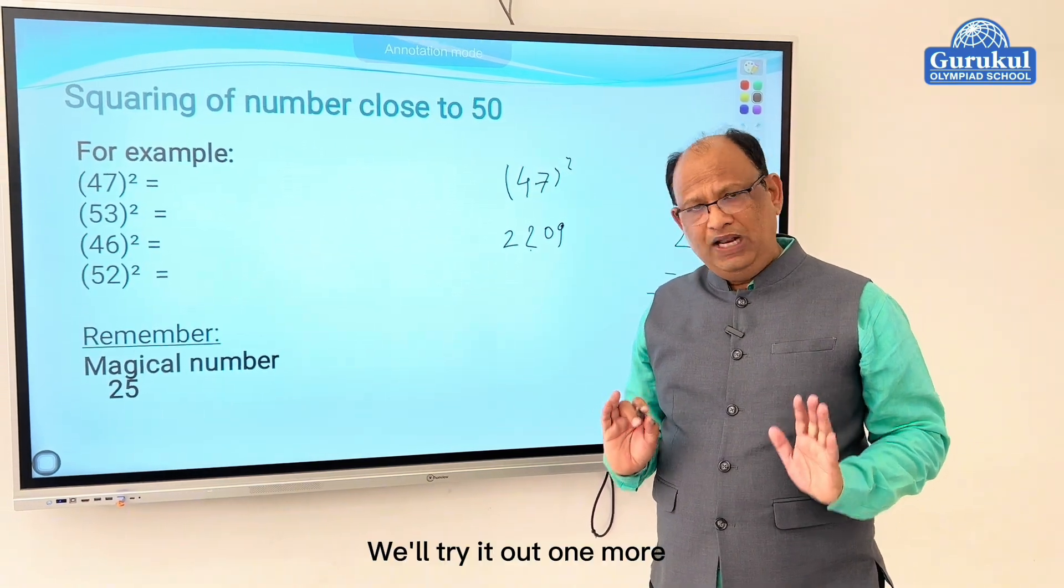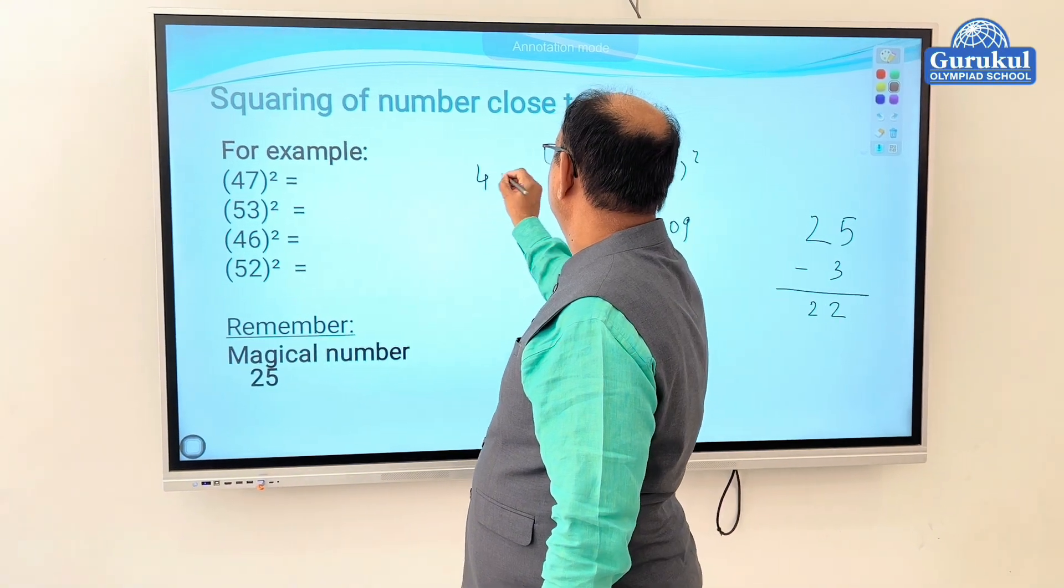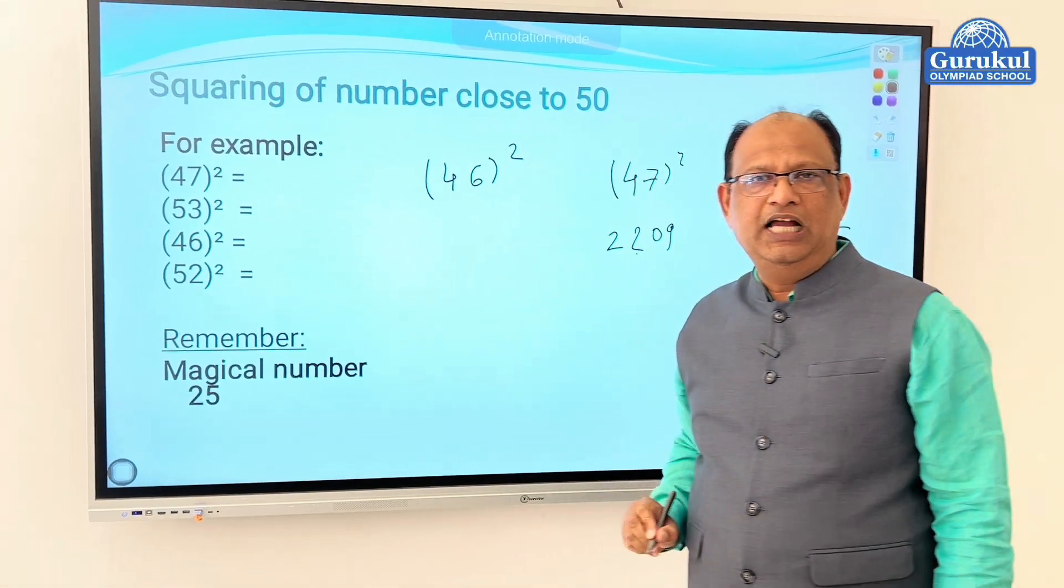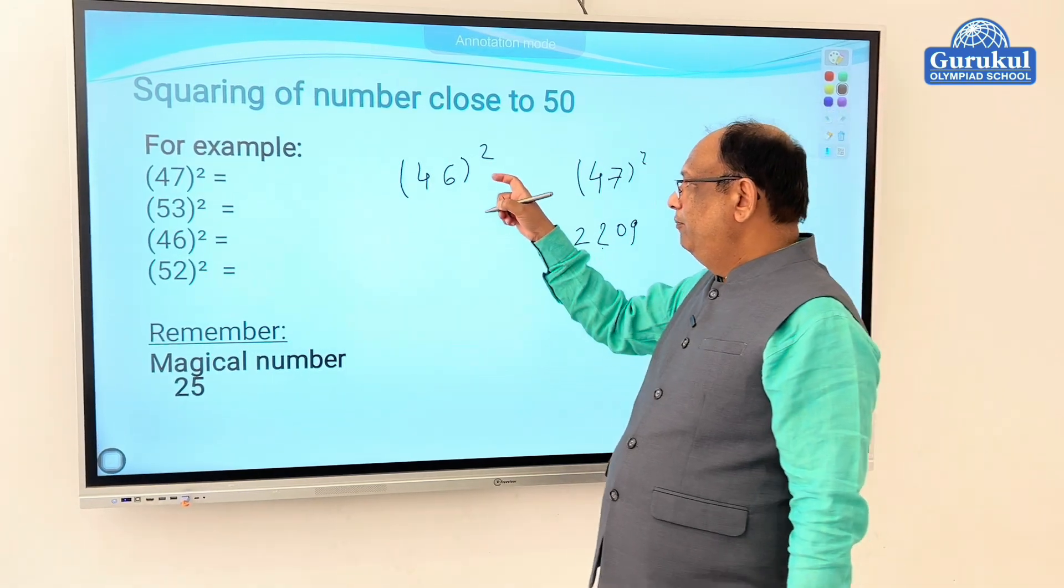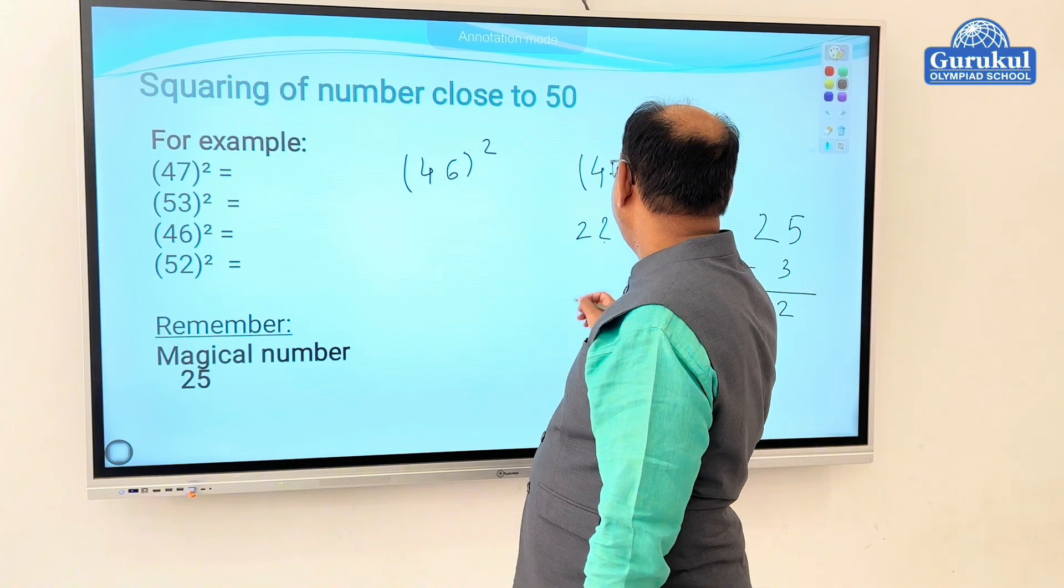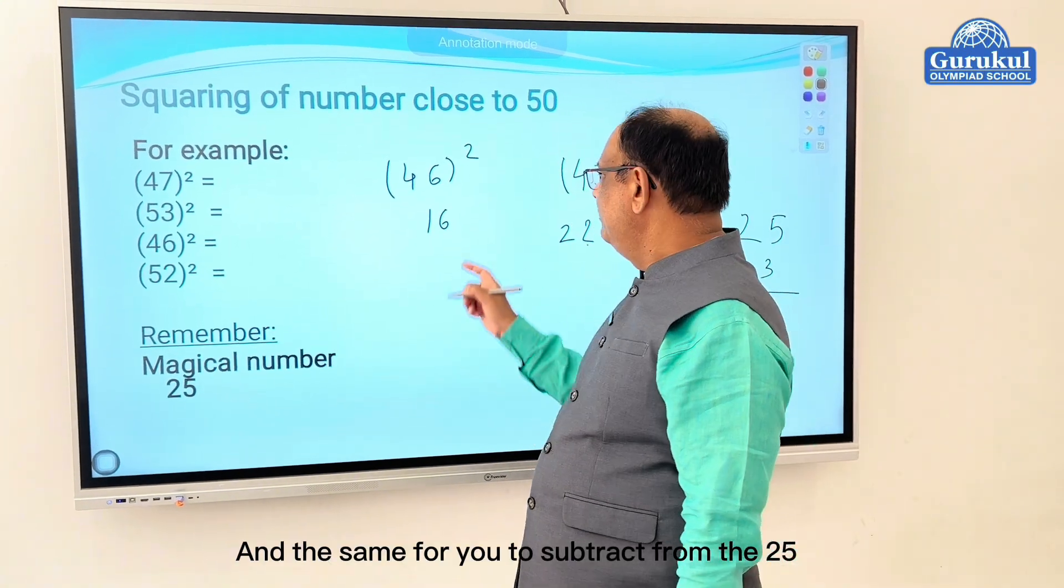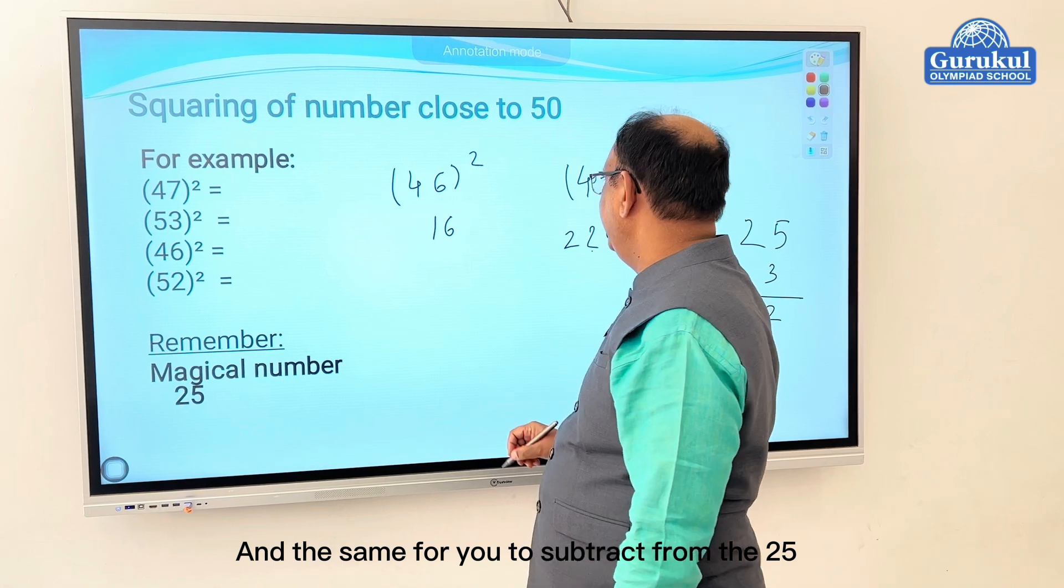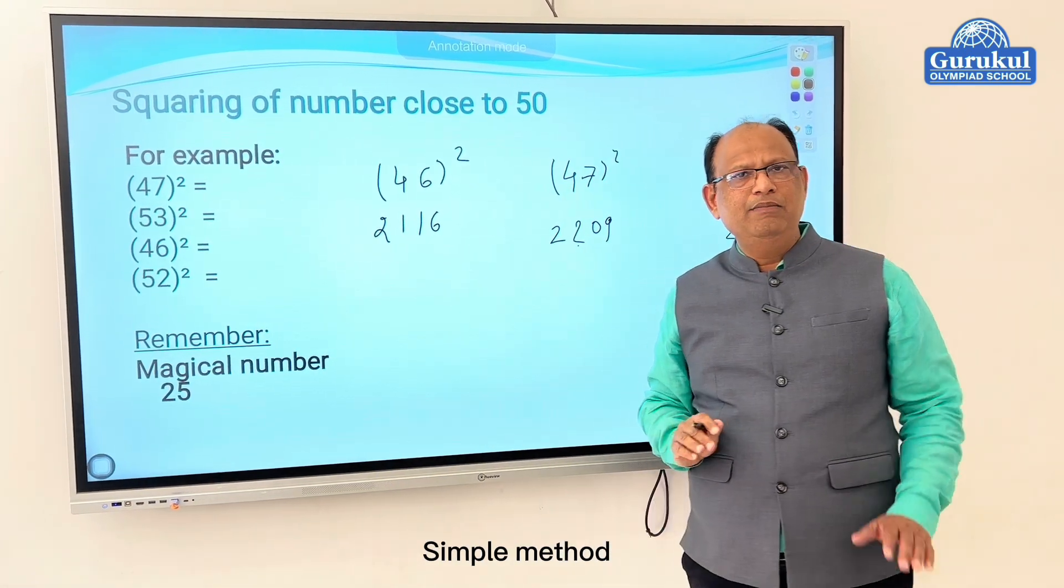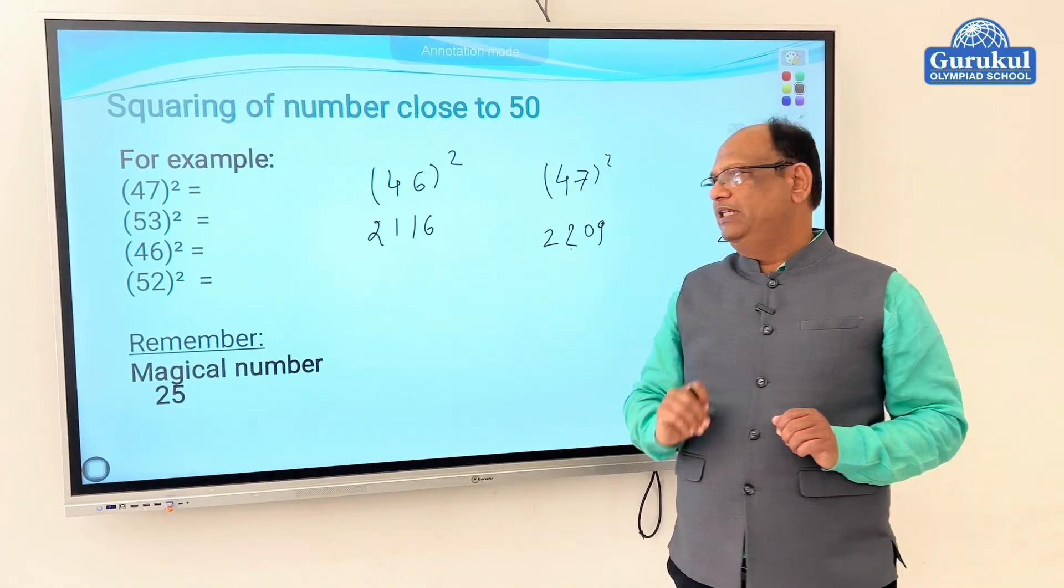Let's try one more. Take 46. 46 squared. What to do? Simple: how far from 50? Four places. So four squared, write it down as 16. And the same four you subtract from 25, and the answer is available as 2116. Simple method.